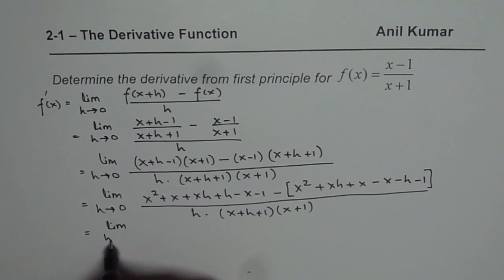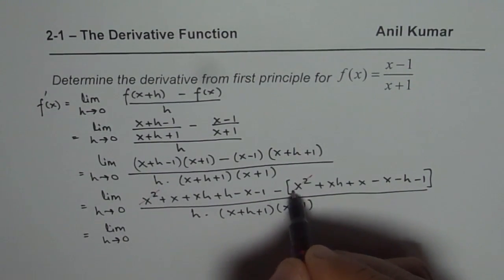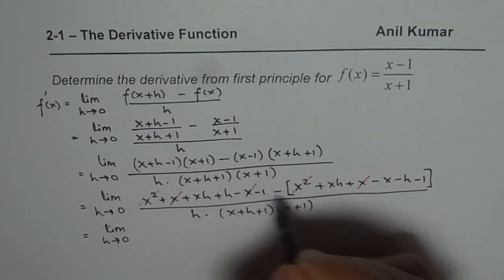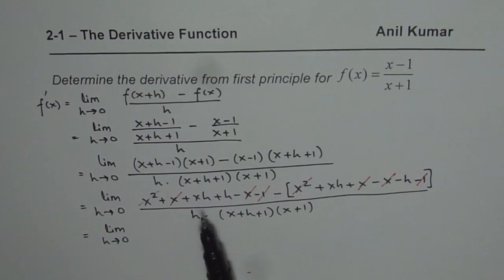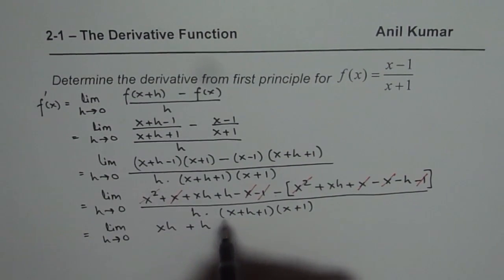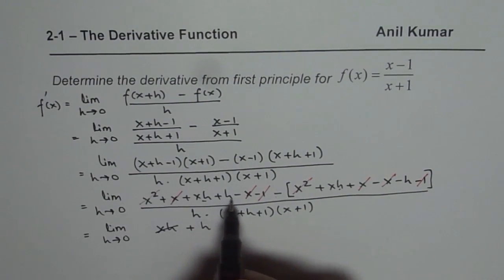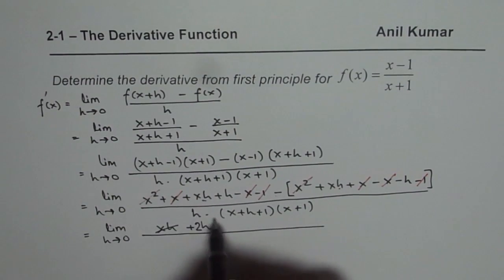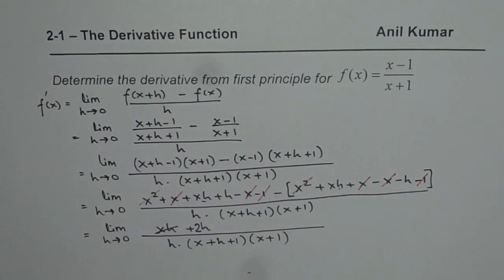Let us cancel the terms that sum to zero in the numerator. x squared minus x squared is 0, x and minus x is 0, and minus x and minus x cancel. What remains are only terms with at least one h. We have x h plus h, and x h terms cancel, leaving plus 2h in the numerator, divided by h times x plus h plus 1 times x plus 1. Now h and h cancel.